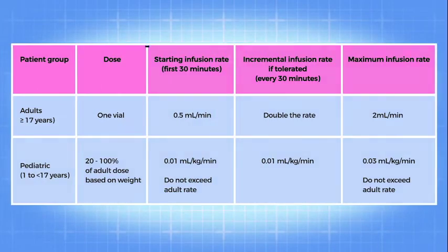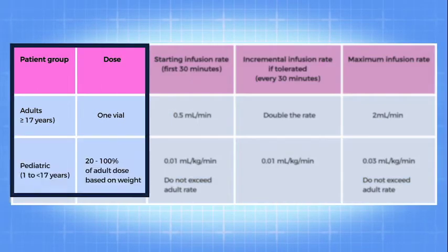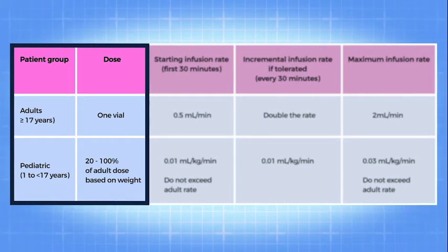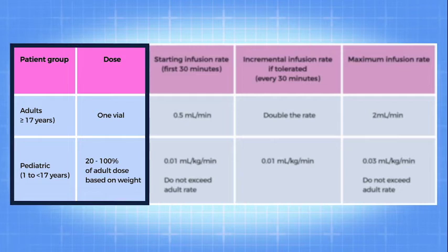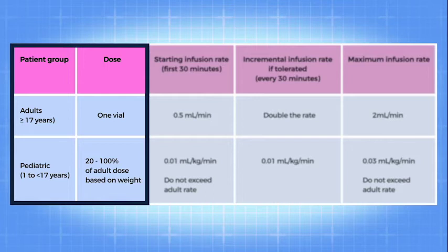The dose for adults is one vial. The dose for children is a percentage of one vial based on weight. Refer to the package insert to calculate the pediatric dose. Discard any unused antitoxin because it does not contain a preservative. Each vial is for a single use. The dose for adults 17 and older is one vial. The pediatric dose for children less than 17 years old is 20 to 100 percent of the adult dose based on weight.